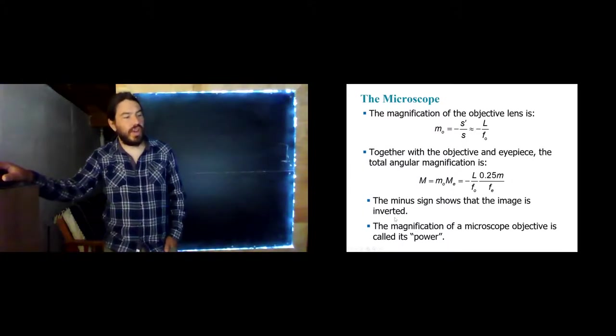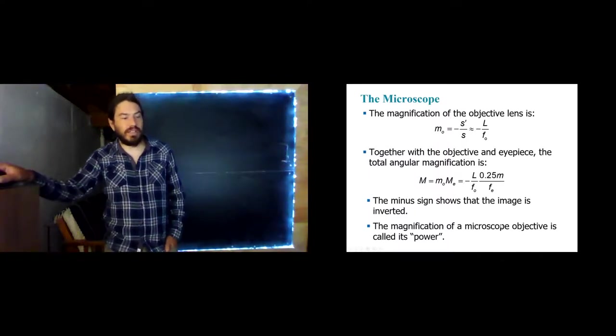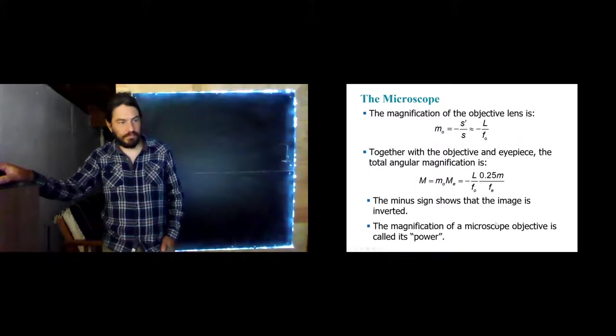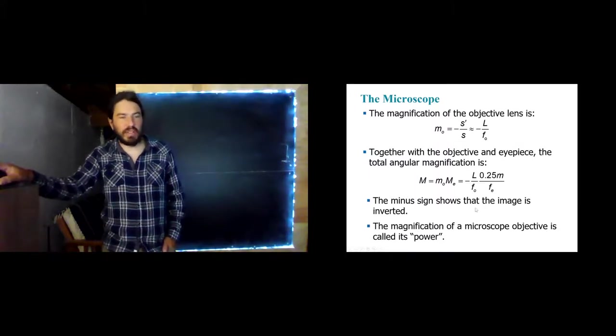And so you can multiply these two magnifications together, and it gives you the total magnification of the system. The minus sign shows that the image is inverted. And this magnification of a microscope is called its power. And you can easily get up to a thousand easily.